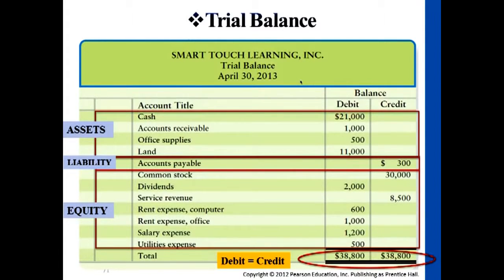The goal of preparing this internal document — the trial balance — is to make sure that the debit column balance and the credit column balance equal each other. If these two do not agree, we have to go back to the ledger to double-check transactions and verify they were posted to the correct side.